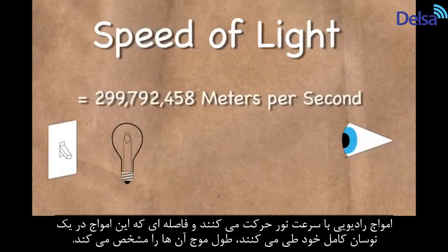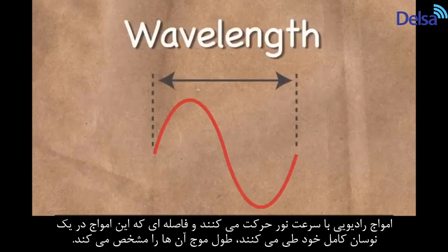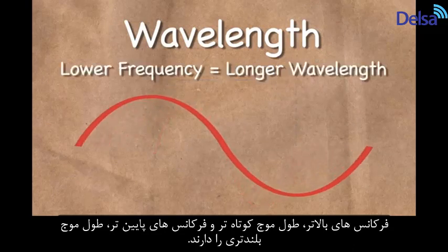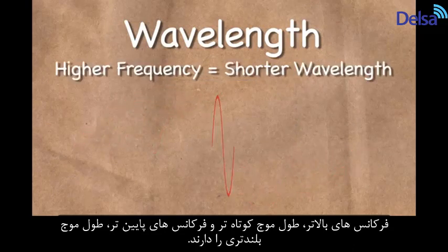Radio waves travel at the speed of light, and the distance traveled during one complete cycle determines the wavelength of the RF signal. Lower frequencies have longer wavelengths, while higher ones have shorter wavelengths.